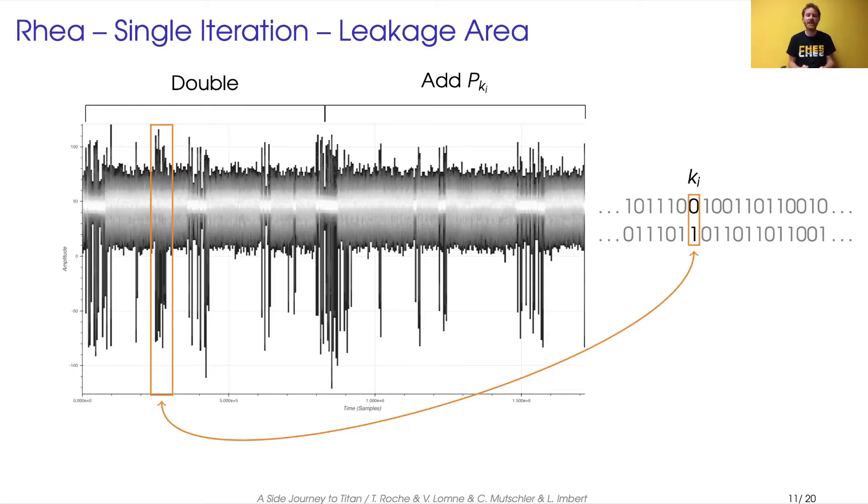So we need to find a data dependency between the traces and the nonce values. So here is a trace of one iteration. So you have the double operation and then the addition. And we found a correlation between the amplitude of the traces and the two bit values that are processed during this iteration.